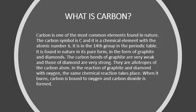What is carbon? Carbon is one of the most common elements found in nature. The carbon symbol is C and it is a chemical element with the atomic number 6. It is in the 14th group in the periodic table. It is found in nature in its pure form as graphite and diamonds. The carbon bonds of graphite are very weak and those of diamonds are very strong. They are allotropes of the carbon atom. In the reaction of graphite and diamonds with oxygen, the same chemical reaction takes place. When it burns, carbon is bound to oxygen and carbon dioxide is formed.